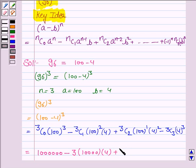The third term is 3 times 100 times (4)², which is 16, equals 4,800. ³C₃ is 1, so the last term is (4)³, which is 64.